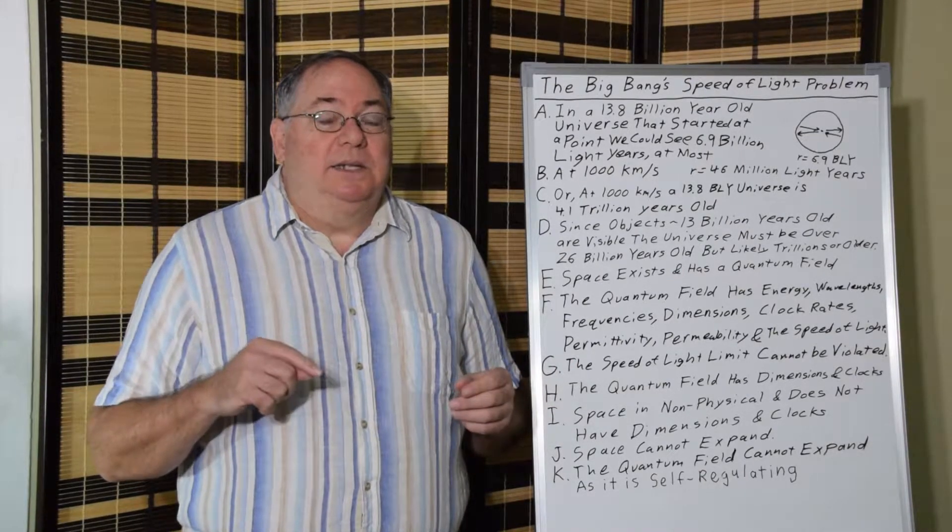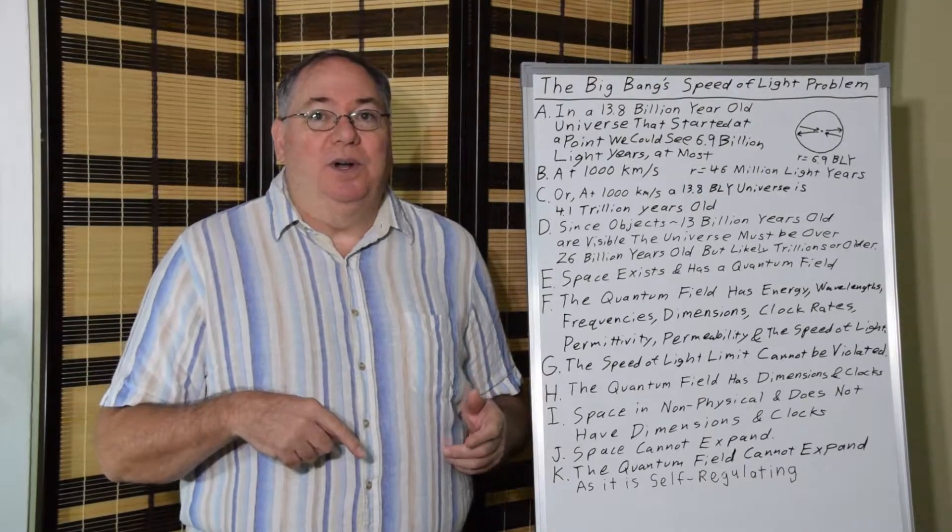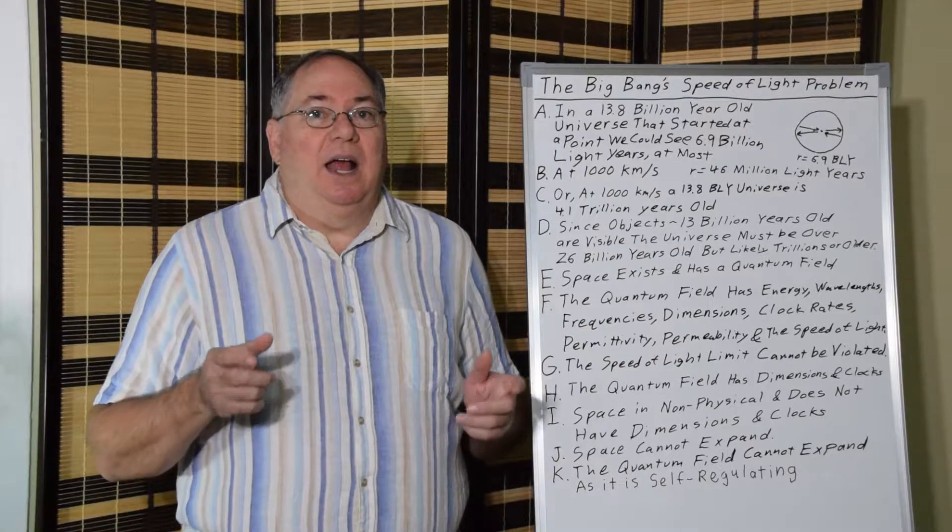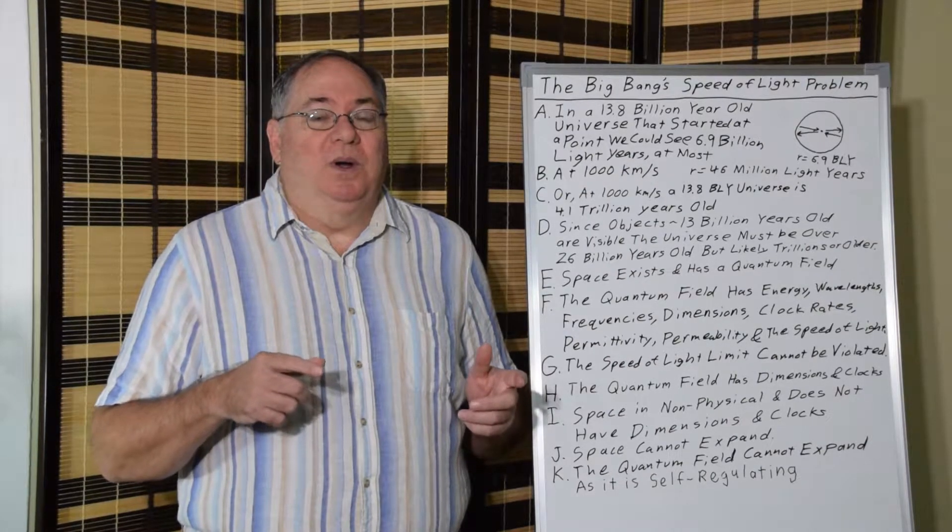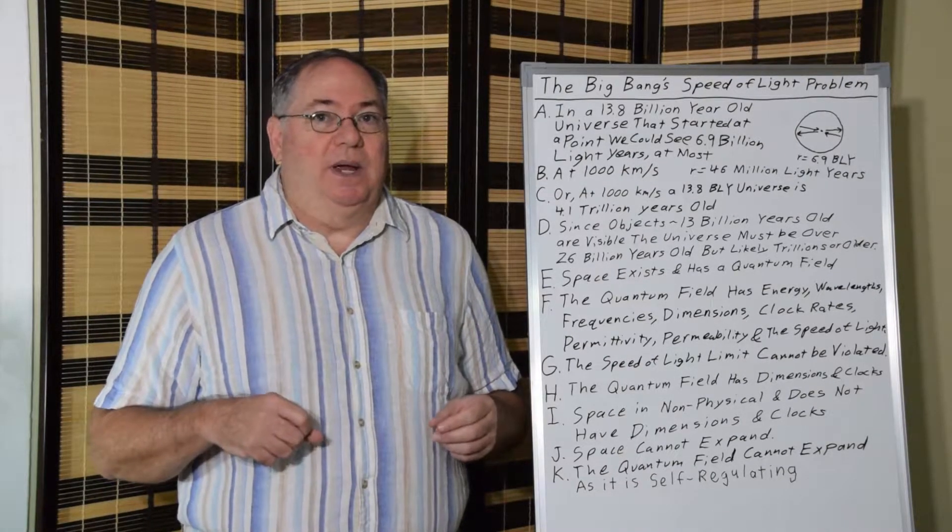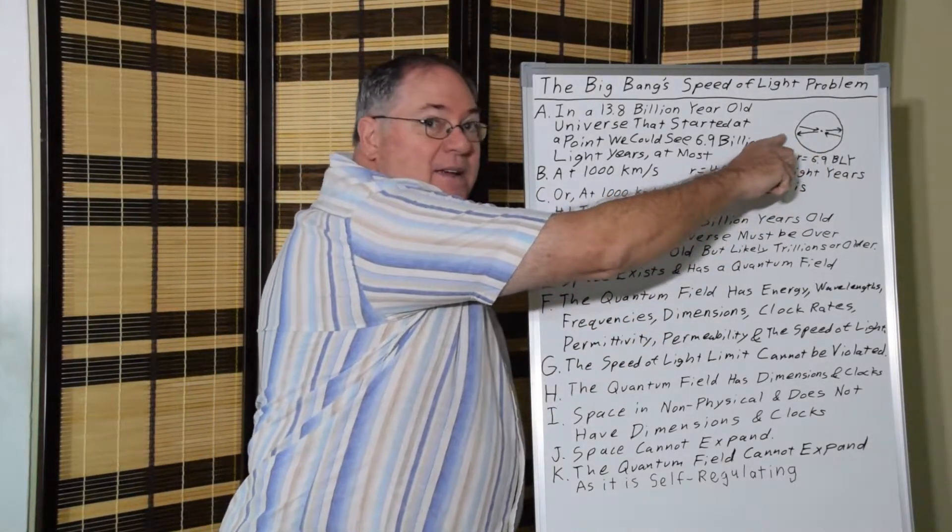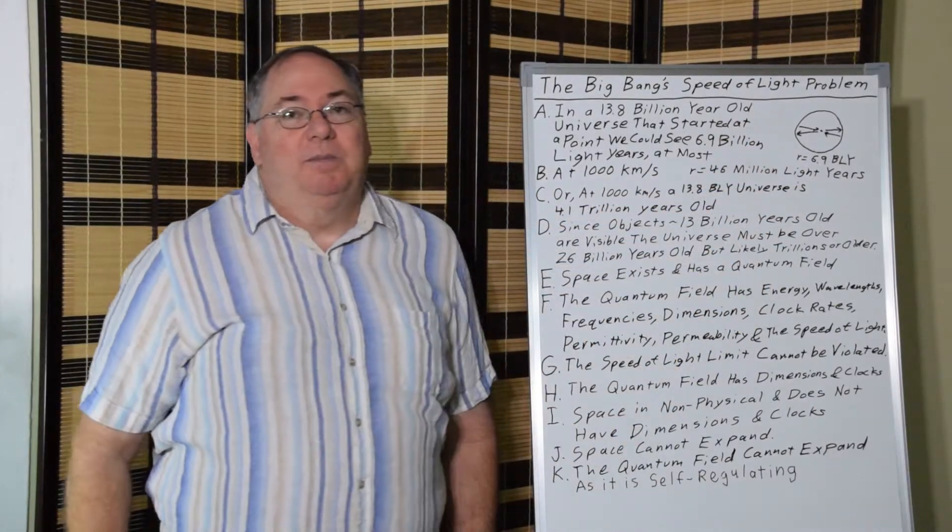But, because light has to travel back in order to reach us, we could only see objects that were half that distance away. 6.9 billion light years. So, because the objects have to go out and then the light has to go back.